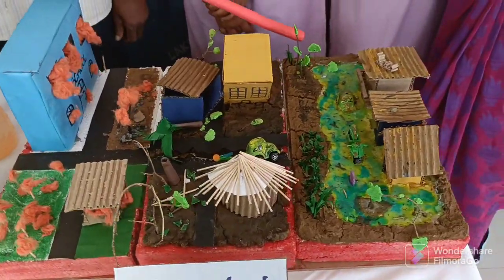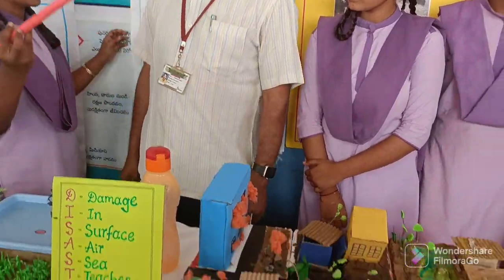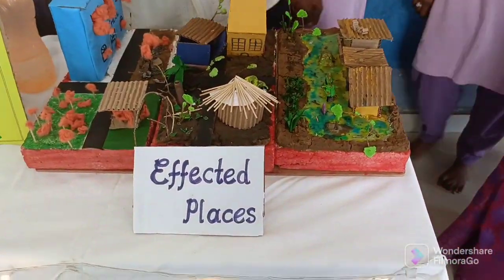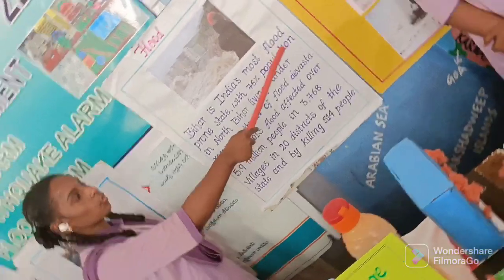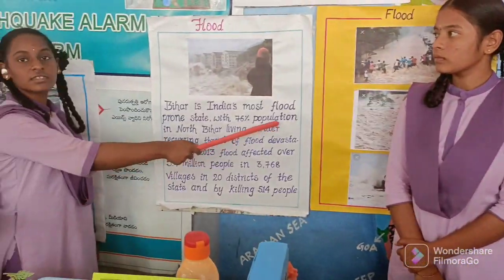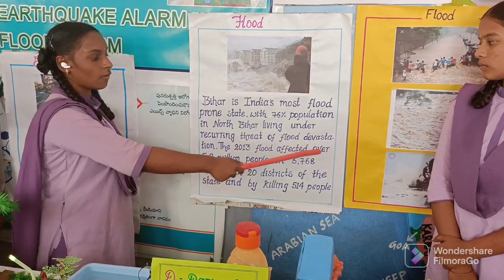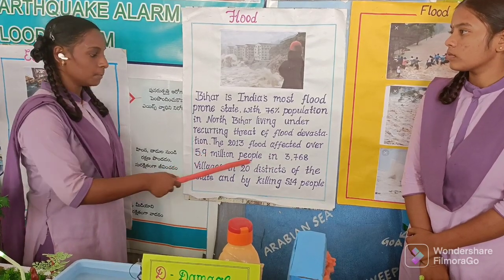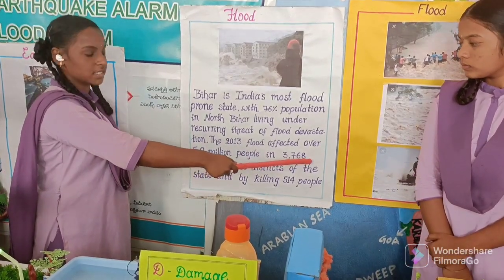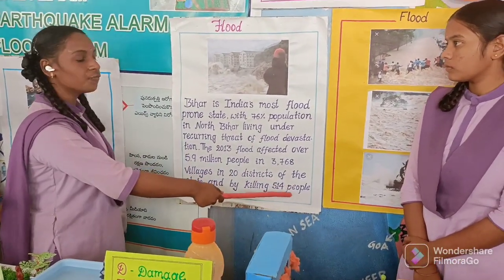We have made diagram models of the disasters: this is the flood disaster model, this is the earthquake disaster model, and this is the fire disaster model. We have a few incidents of flood in India. Bihar is India's most flood-prone state, with 76% of the population in North Bihar living under the recurring threat of flood devastation. The 2013 flood affected over 5.9 million people in 3,768 villages across 20 districts, killing 514 people.